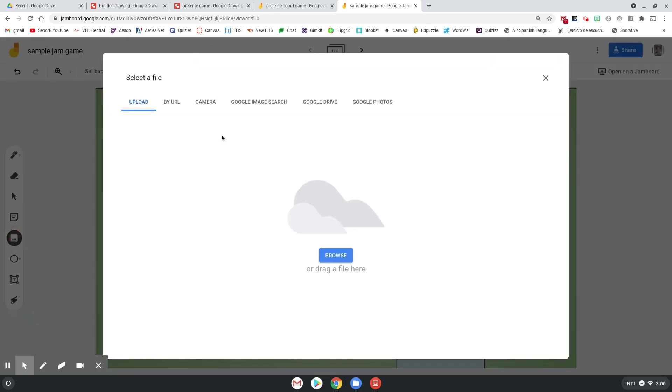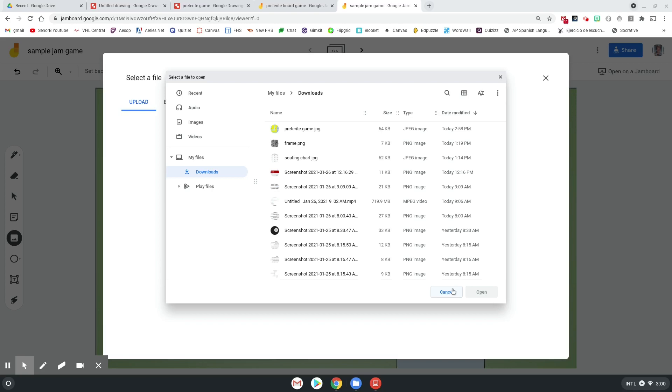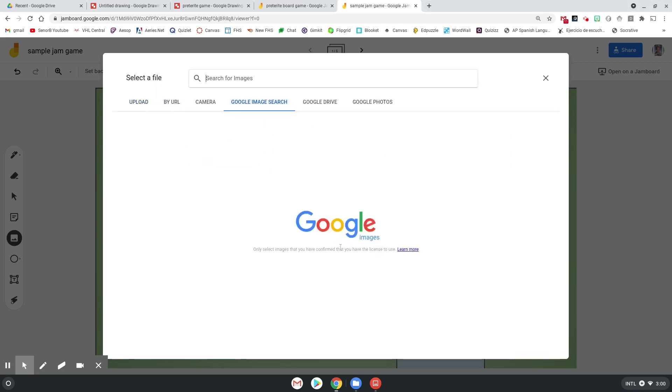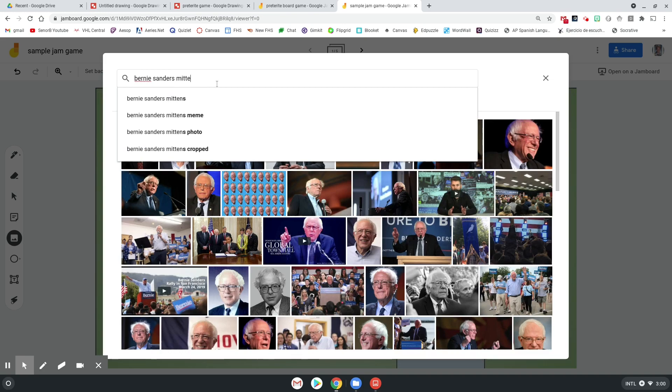So they're going to come over here and add an image. So let's say that somebody would like to be – oh, I'm sorry. Let's go Google Image Search because that's easier. Let's go with Bernie Sanders Mittens, maybe. Make it current.